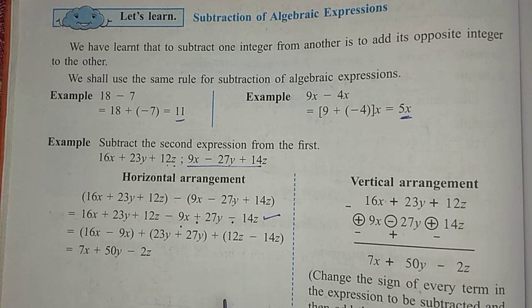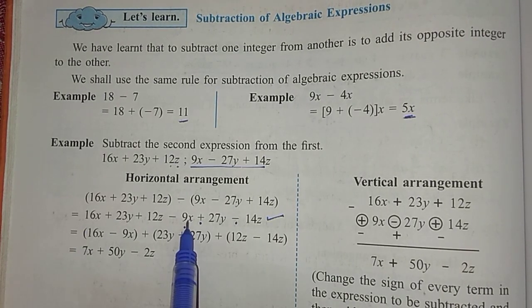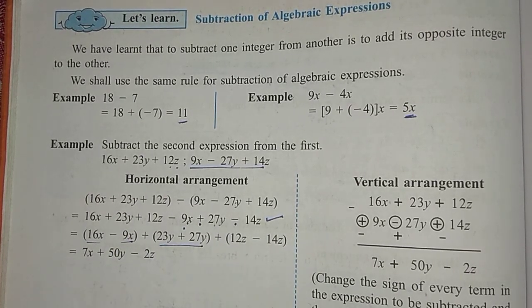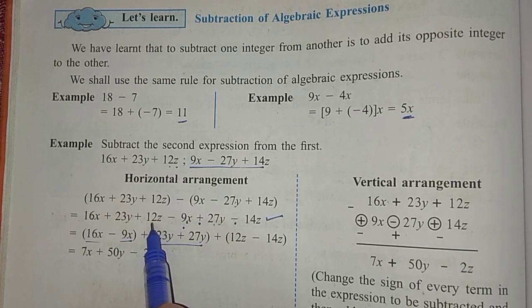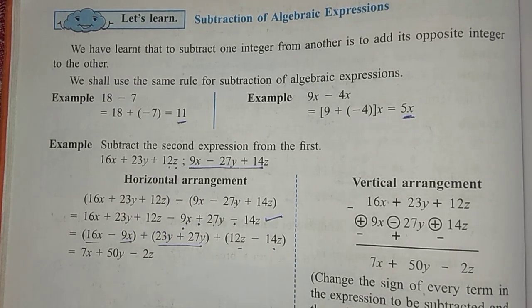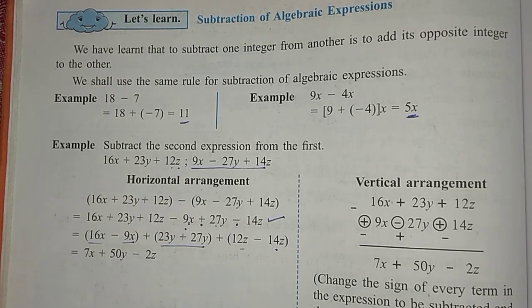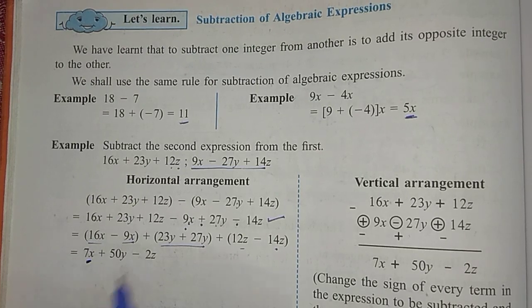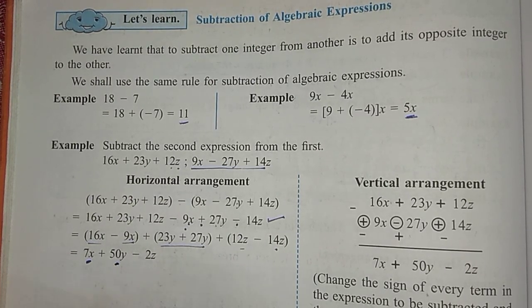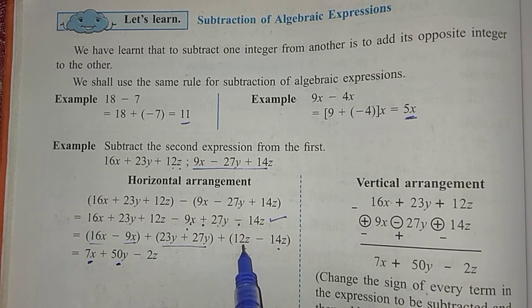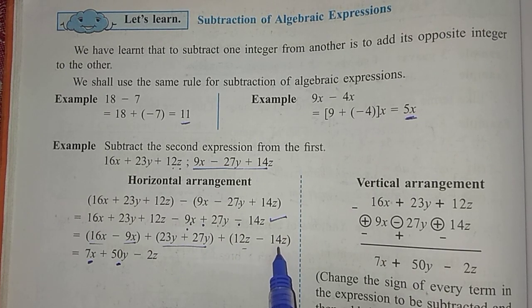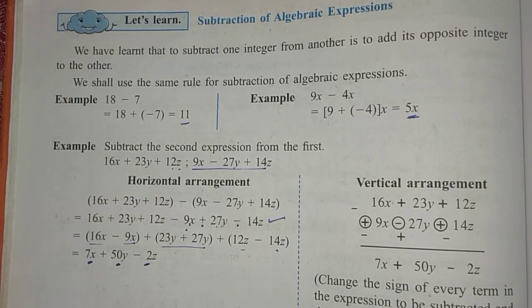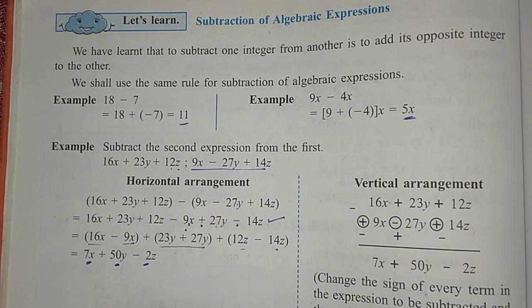After this step we have to write the like terms together. 16x minus 9x are written together. Plus 23y plus 27y are written together. Plus 12z minus 14z are written together. Now write the three answers: 16x minus 9x is 7x. 23y plus 27y is 50y. Plus 12z minus 14z gives minus 2z. This is the horizontal method — horizontal arrangement.